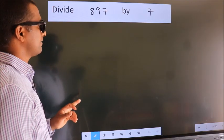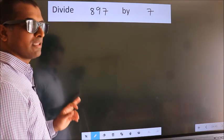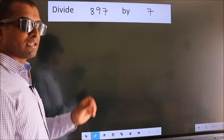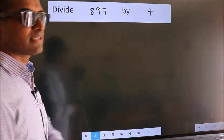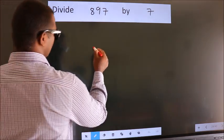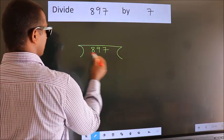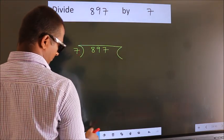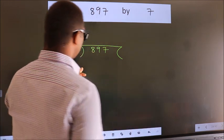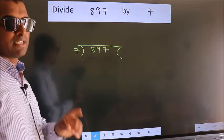Divide 897 by 7. To do this division, we should frame it in this way. 897 here, 7 here. This is your step 1.